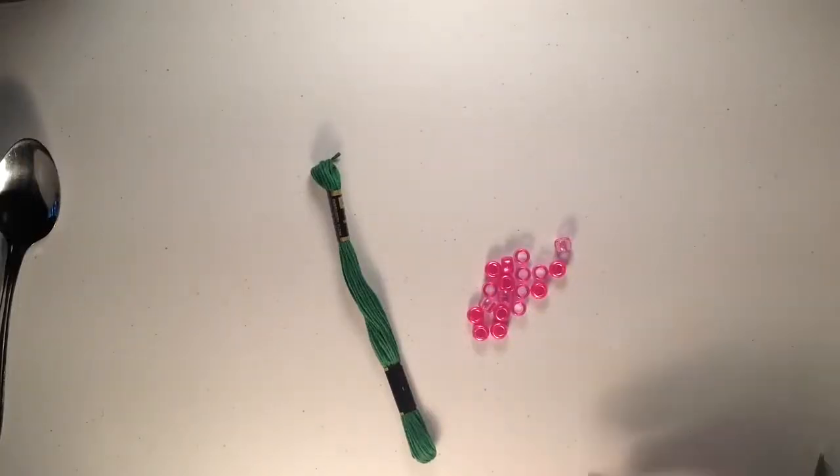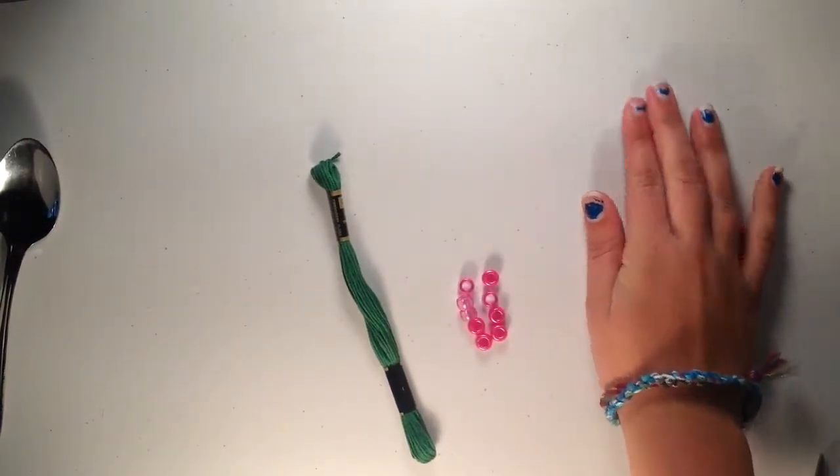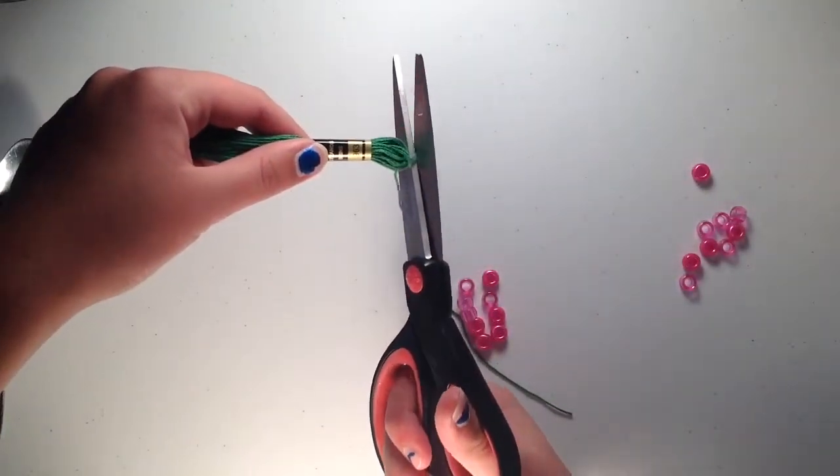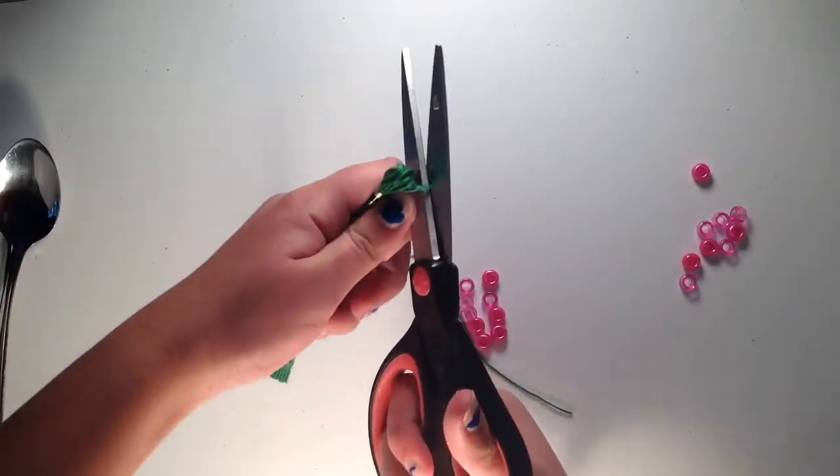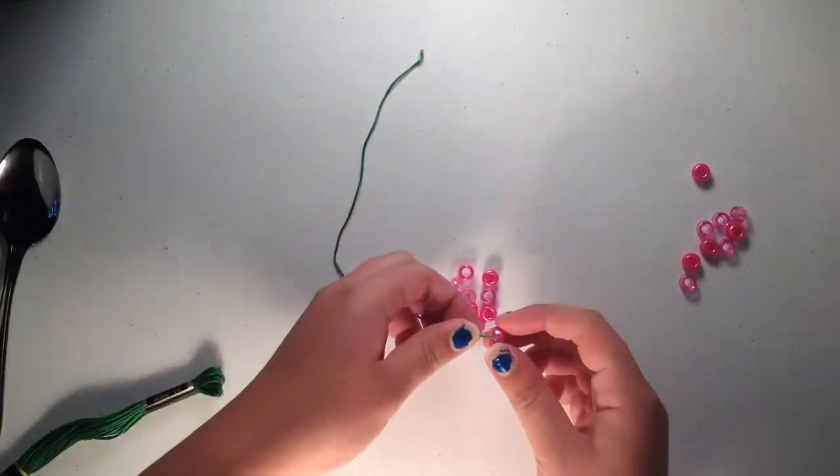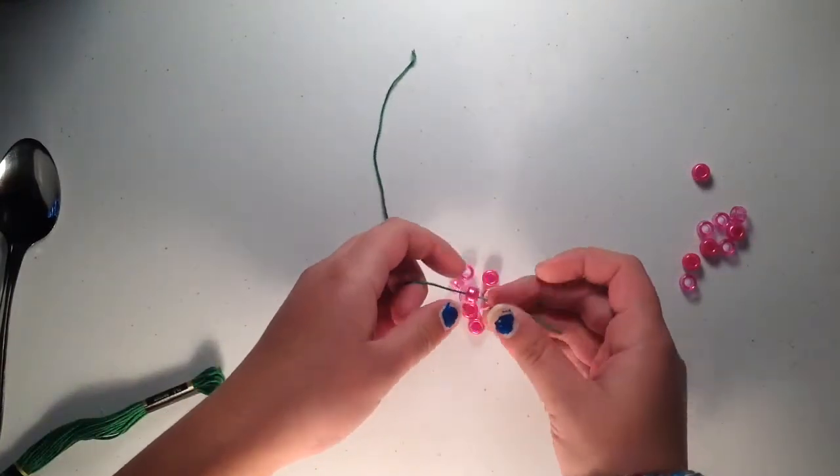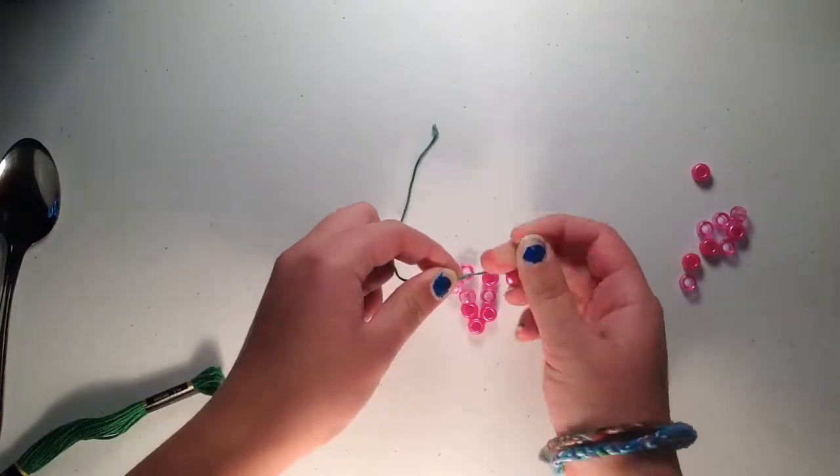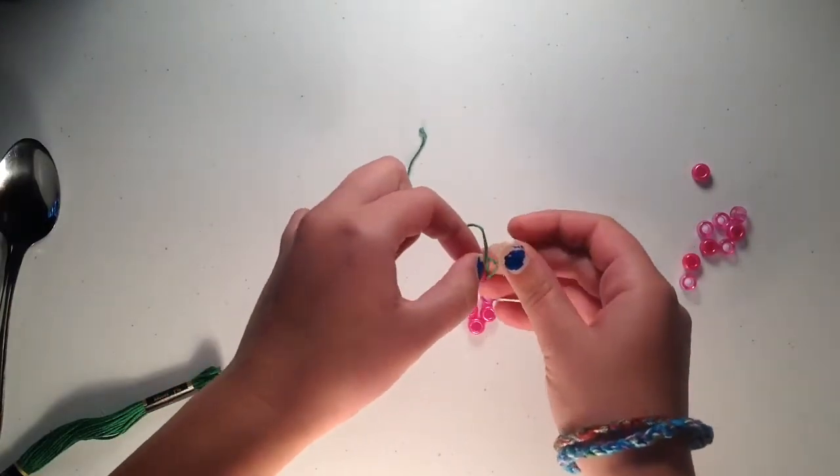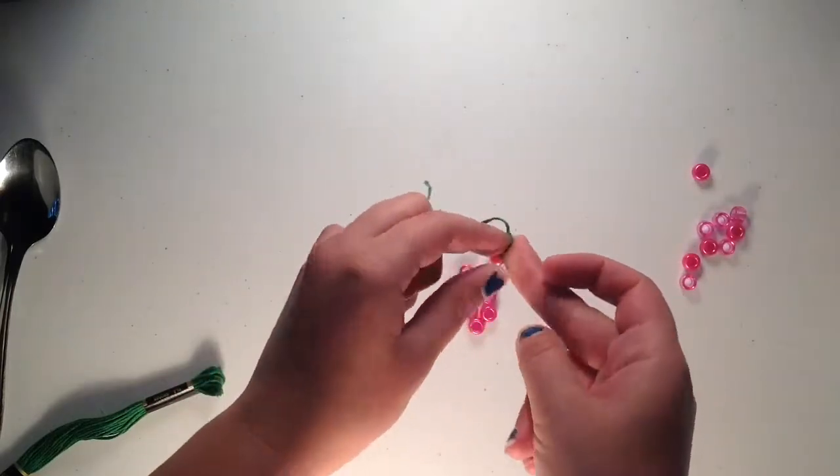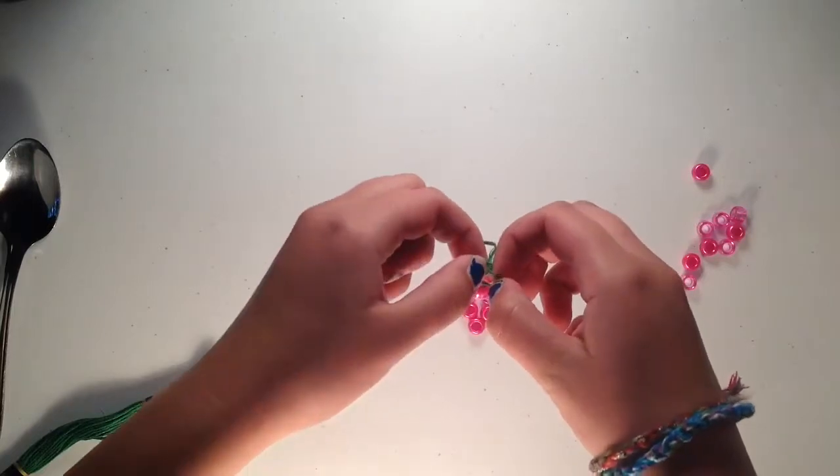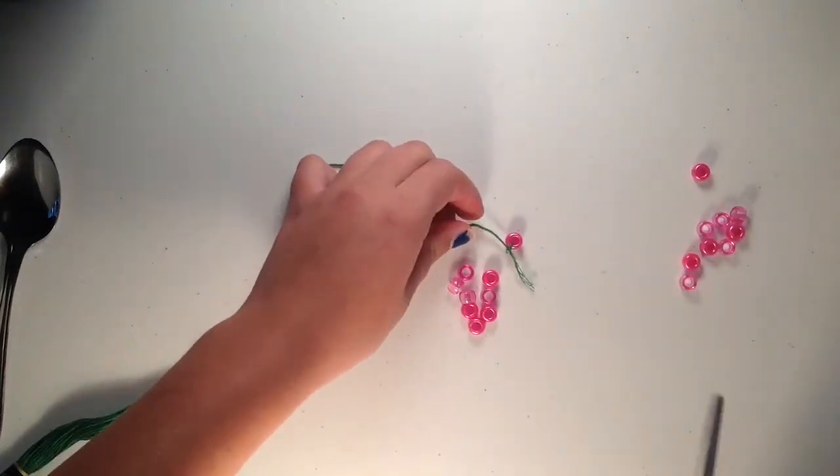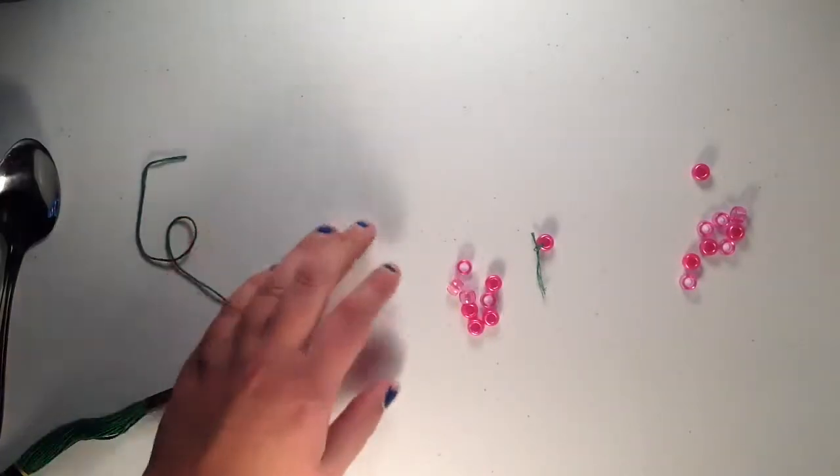So first you're going to want to make your cherries. You're not going to use all your beads, you're going to use about half of your beads. Just take your string, cut about that much off. You can get more if you need to. You're just going to take your bead, string it on, and you're going to do a normal double knot. And then you can go ahead and cut your string, and you're just going to do that with the rest of your beads.